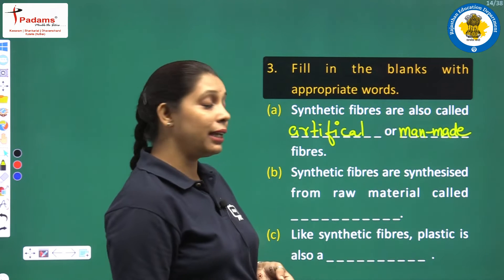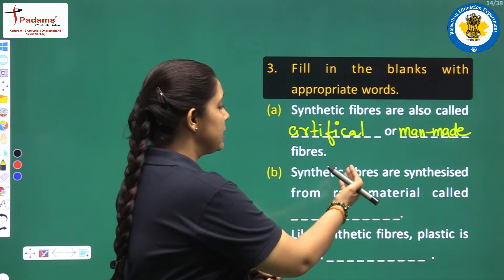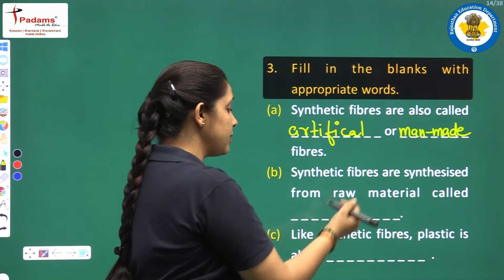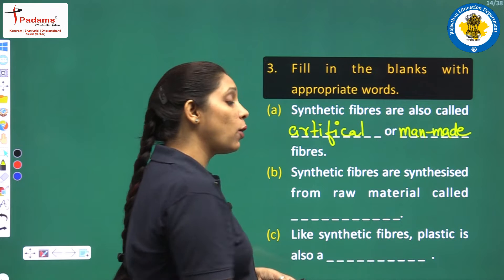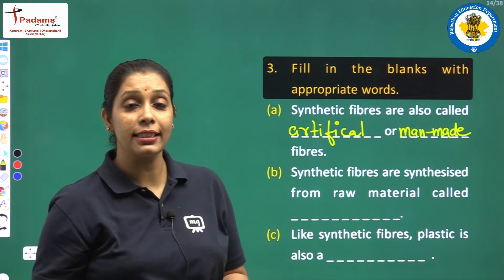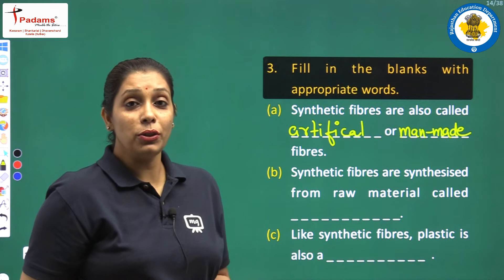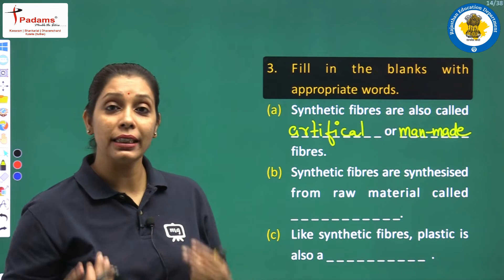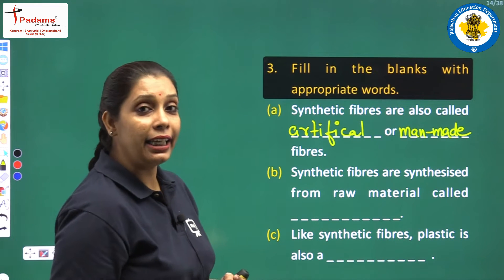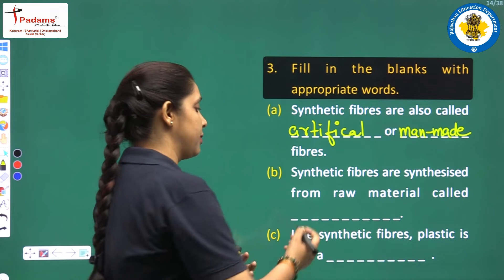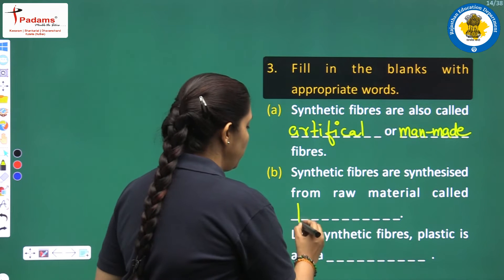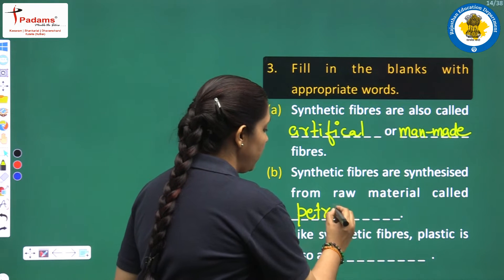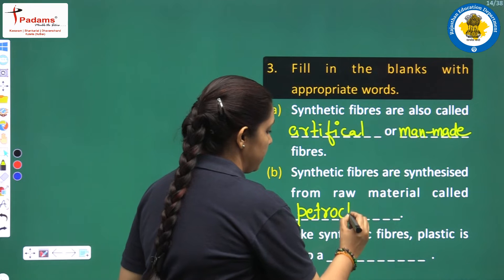Come to the next blank. Synthetic fibers are synthesized from raw material called — they are petrochemicals. So you can write here petrochemicals.